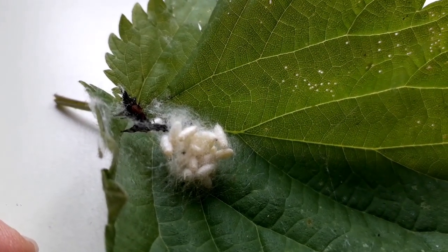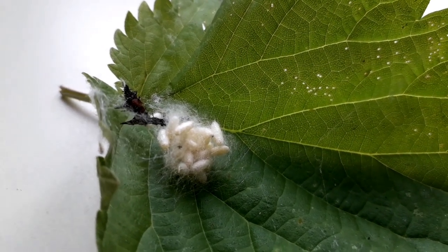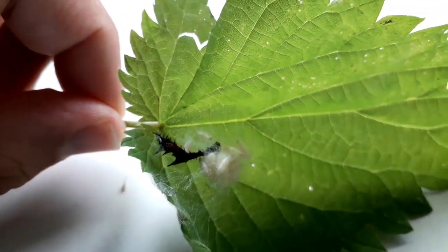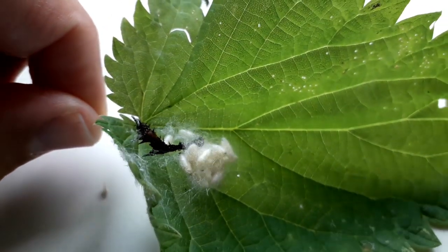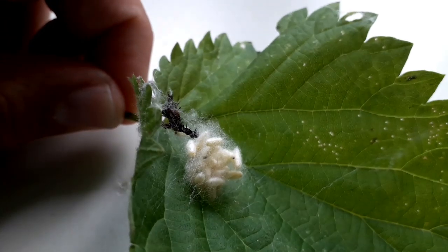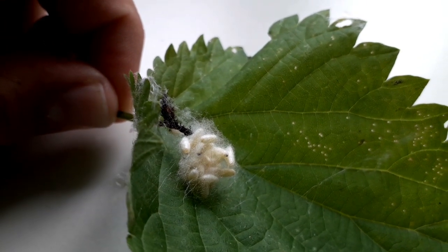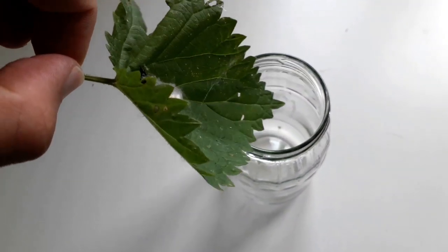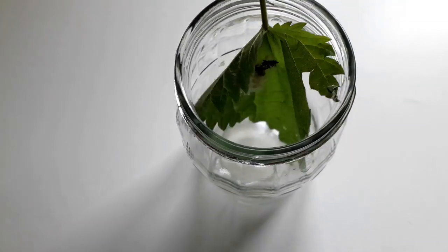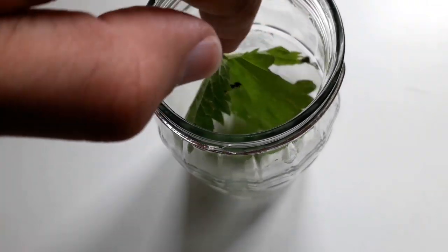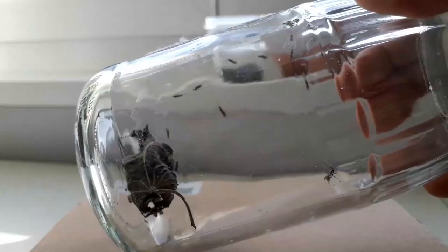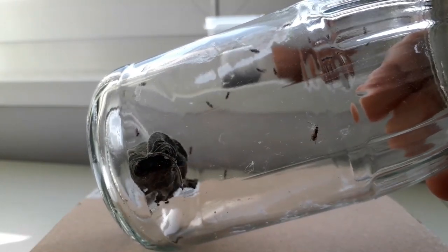So now let's have a closer look. The white fluffy stuff that you see here, these are the cocoons of the wasp and the black shriveled structure is the dead caterpillar. The cocoons have metamorphosis happening - the larvae develop into adult wasps. I wanted to monitor this process, so I conserved the leaf with the cocoons, put it into a glass jar with a lid, and waited until the wasps emerged.